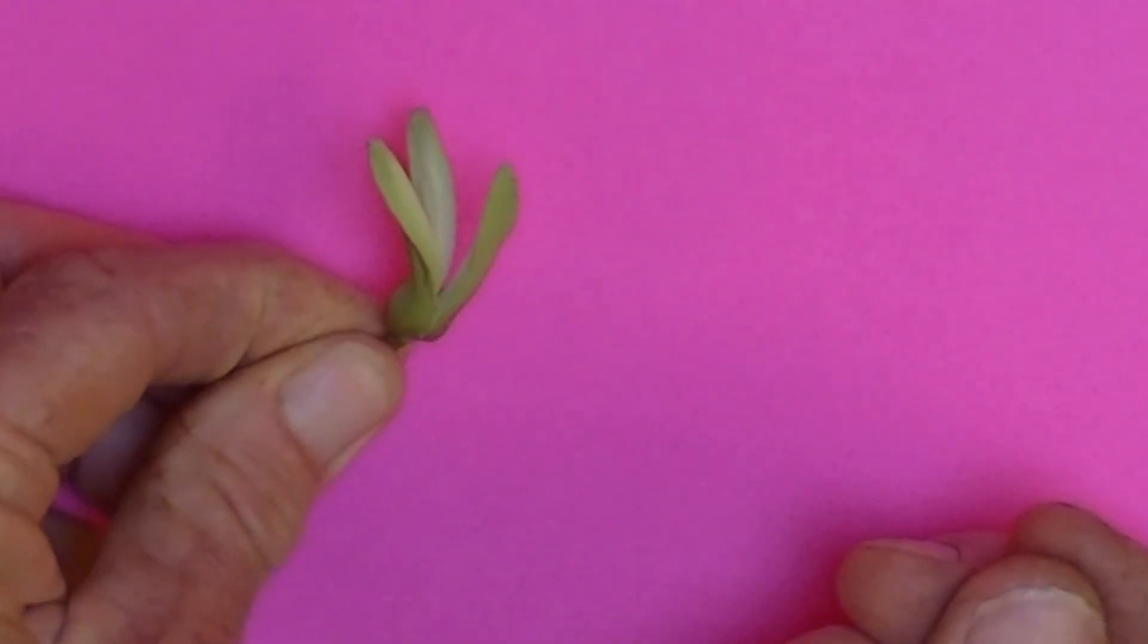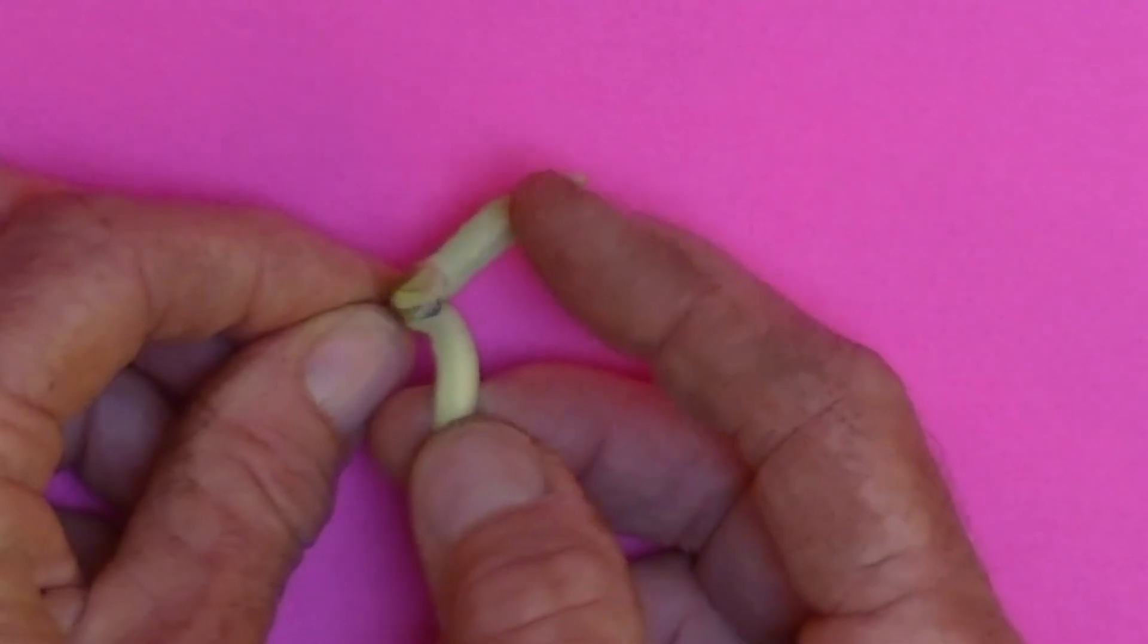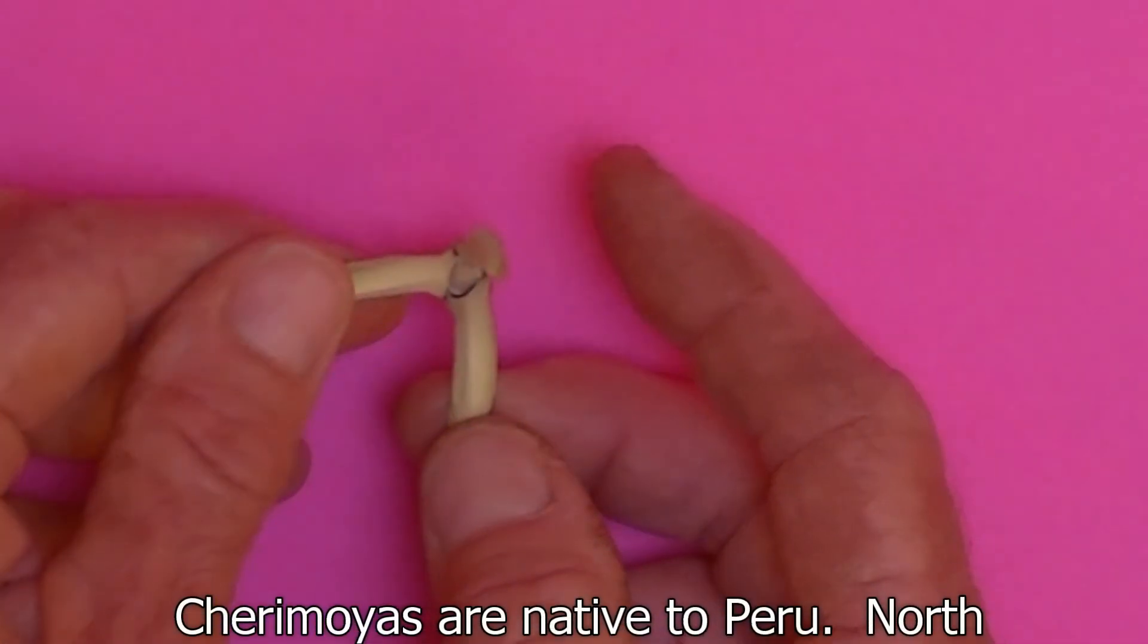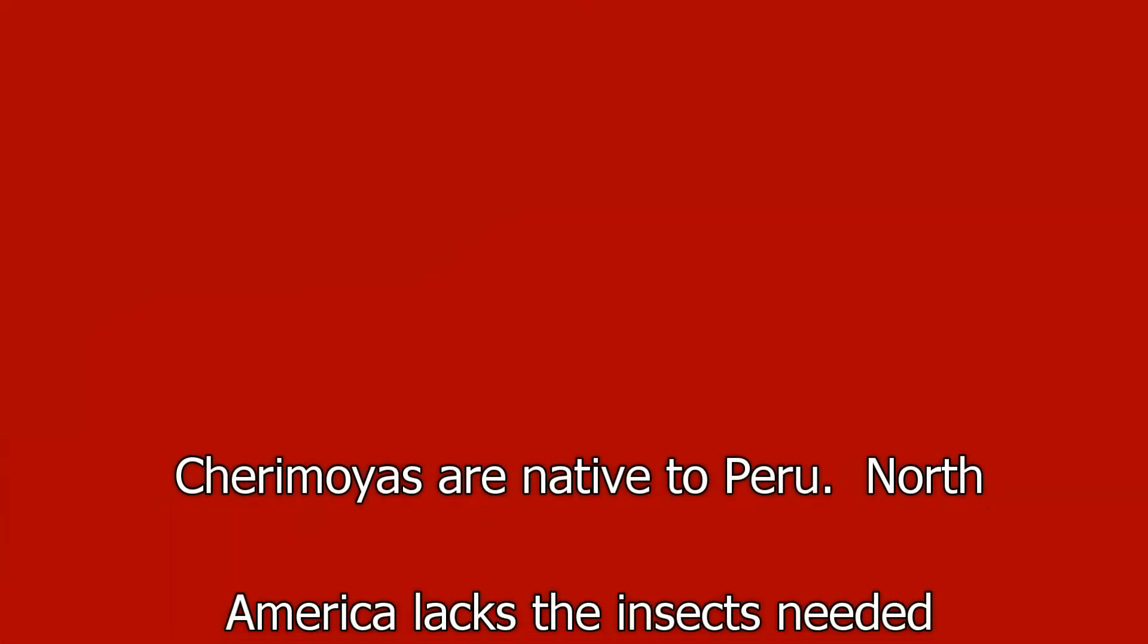And here's the flower ready to receive pollen. Younger, pollen isn't developed around the outside, but the inside's ready.